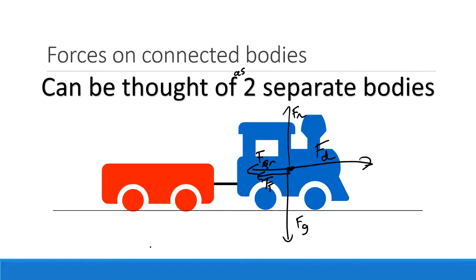The normal force and gravitational force will probably be balanced — it's not going to fall into the rails or float into the air. But the driving force, frictional force, and tension force may or may not be balanced. That's just the forces on the engine, not accounting for the forces on the carriage.